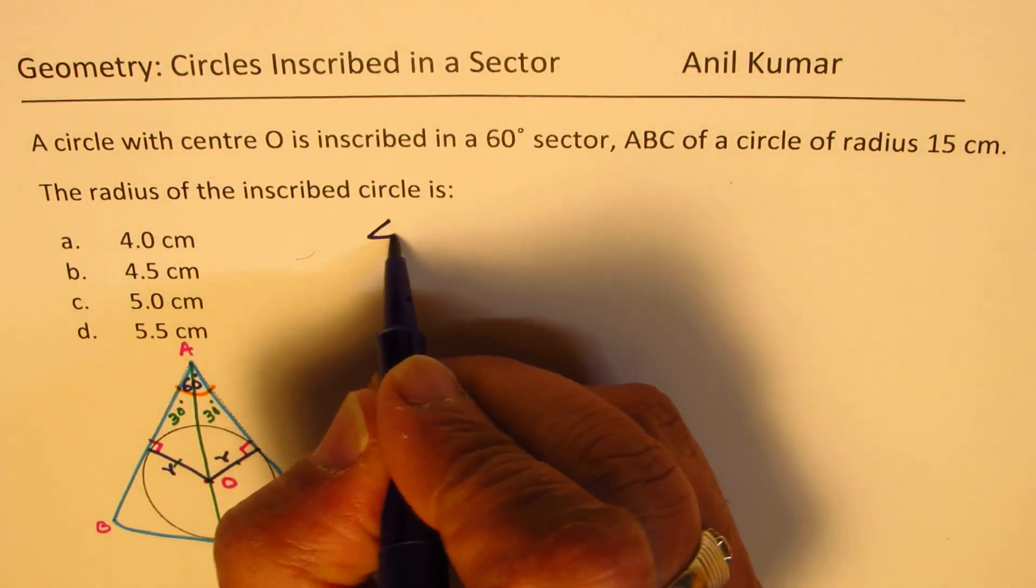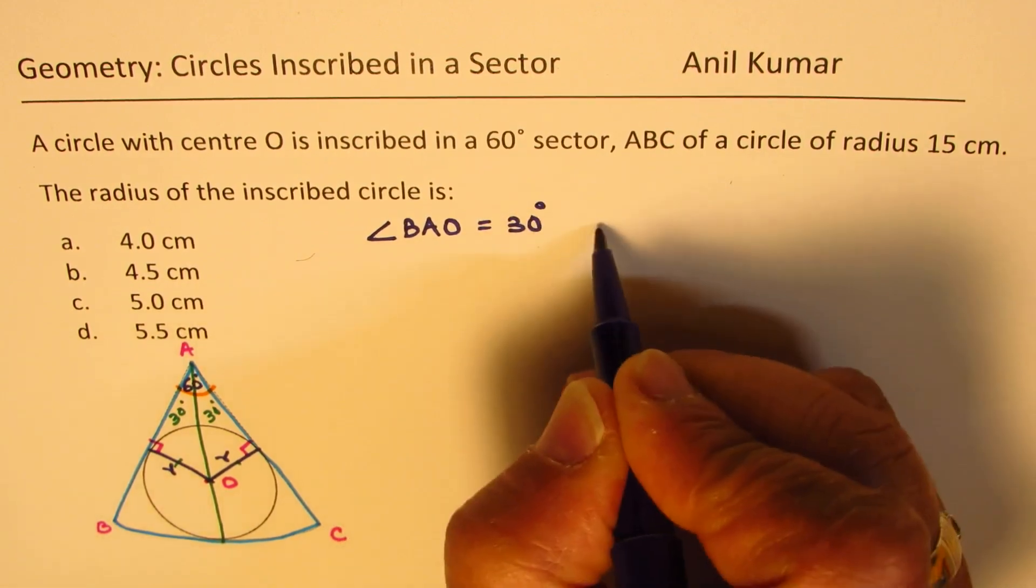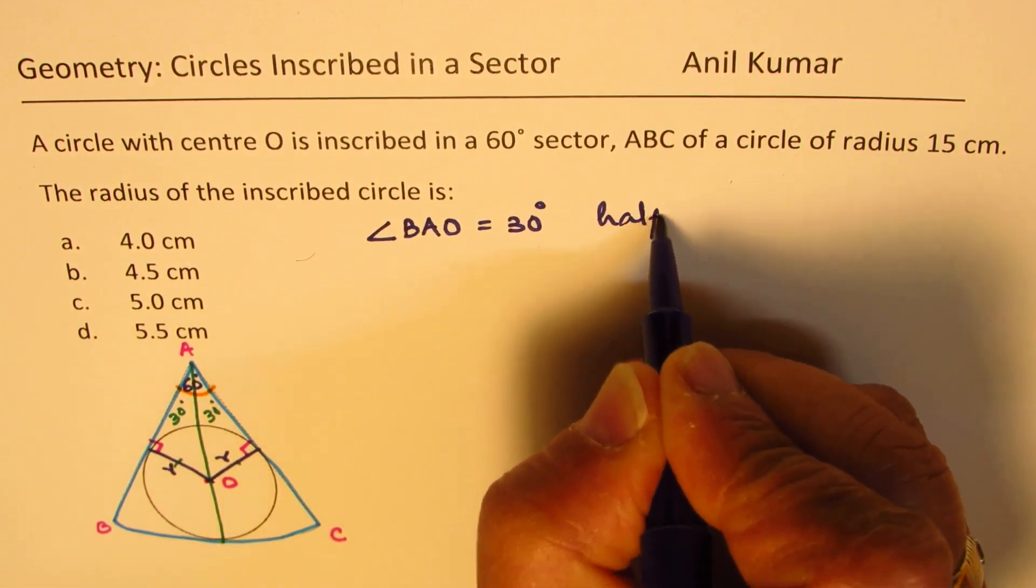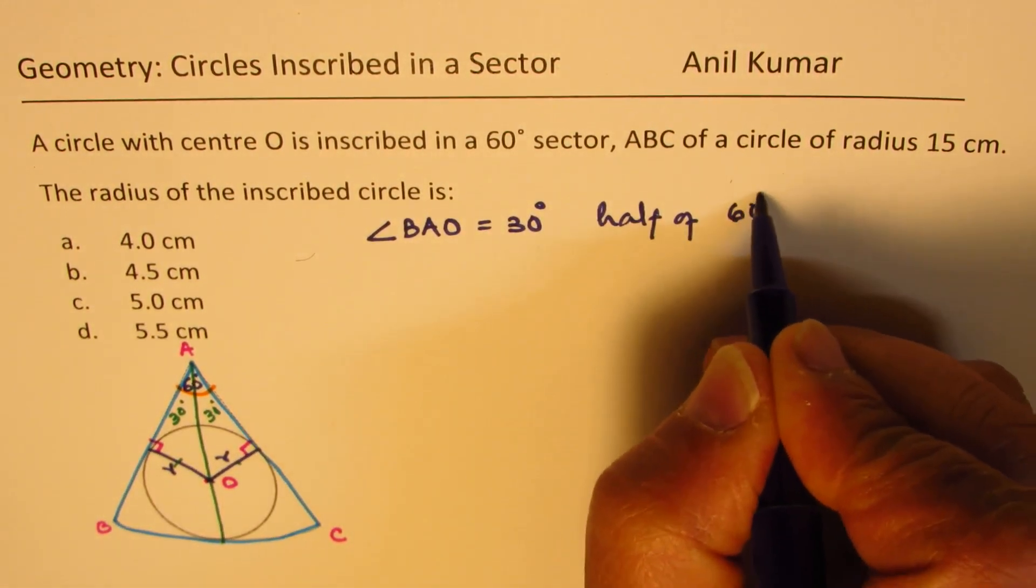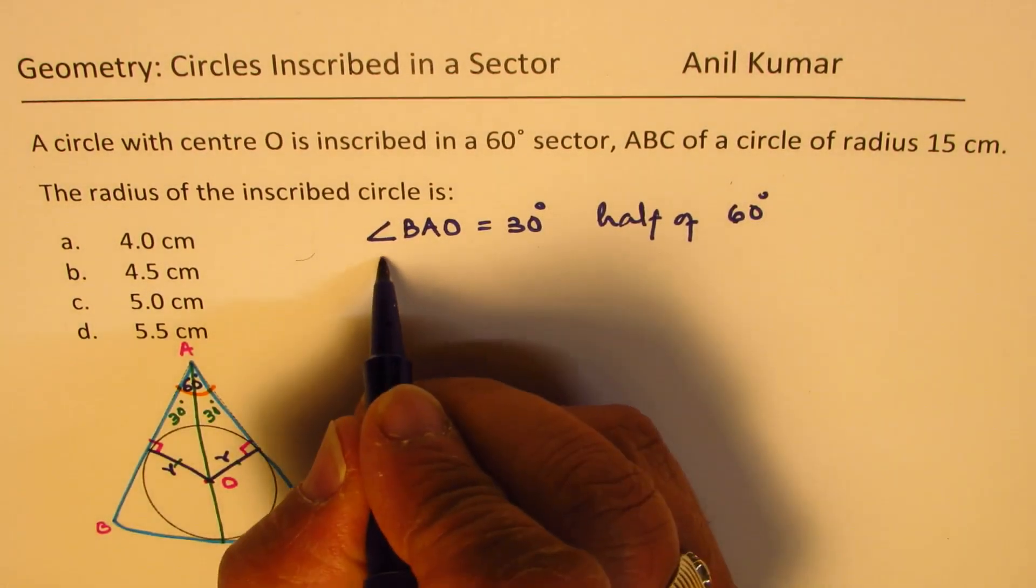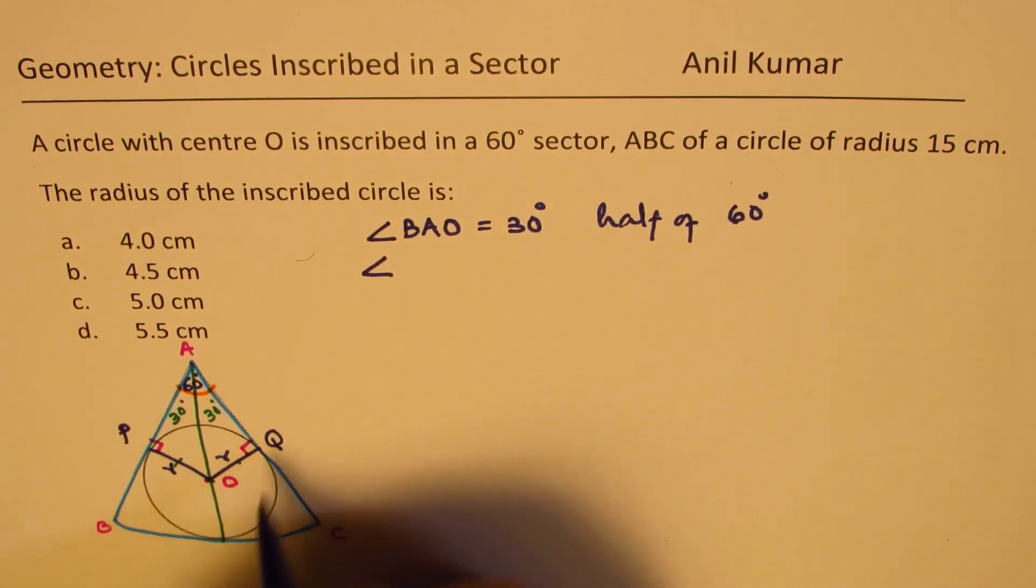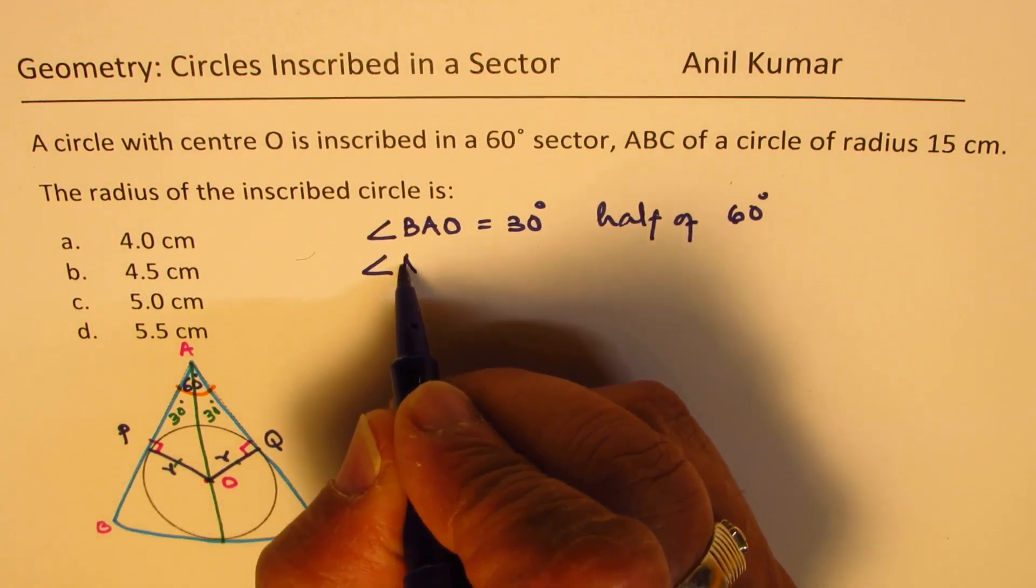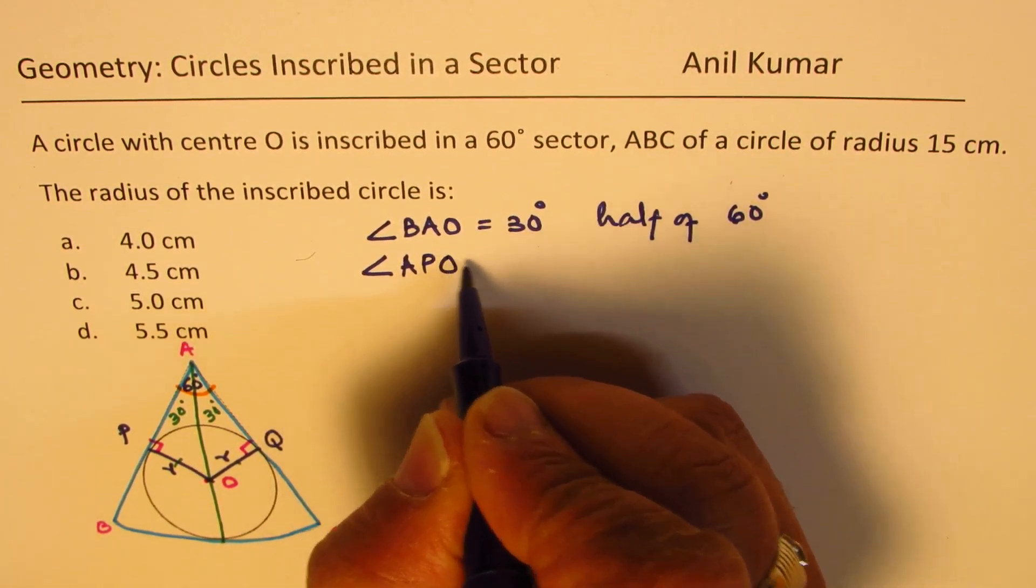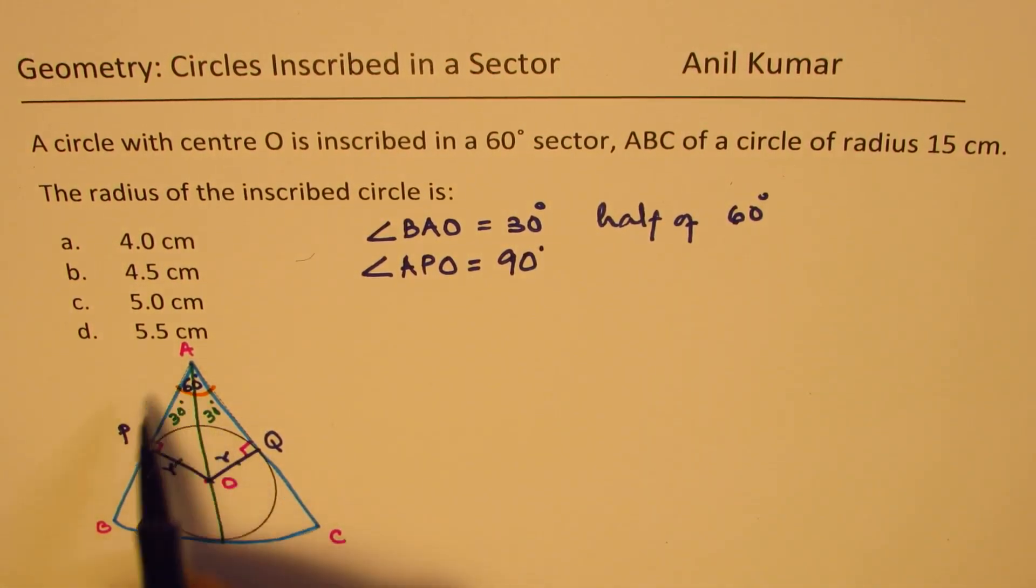So we know that the angle BAO is 30 degrees, which is half of 60 degrees. We also know that the angle, let me call this point as P and this point as Q. APO is 90 degrees, since the circle is inscribed, so that point is tangent.